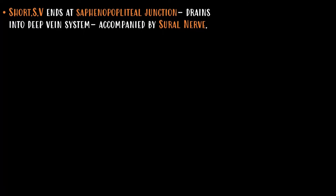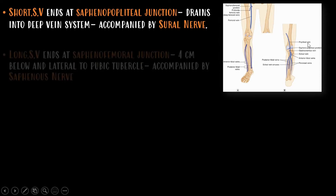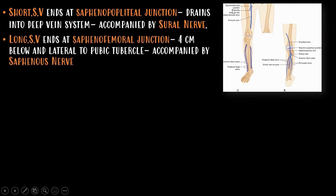Let us now discuss in detail about the superficial veins. The short saphenous vein ends at the saphenopopliteal junction and drains into the deep vein system. It is accompanied by the sural nerve. The long saphenous vein ends at the saphenofemoral junction, which is four centimeters below and lateral to the pubic tubercle. It is accompanied by the saphenous nerve.